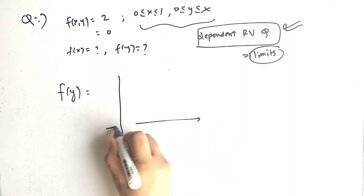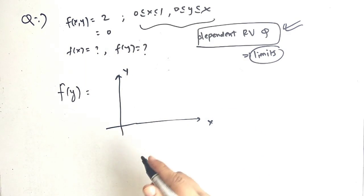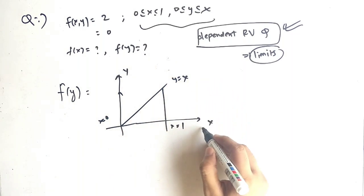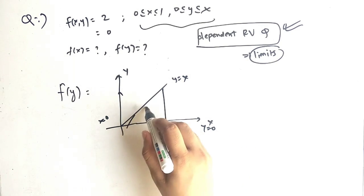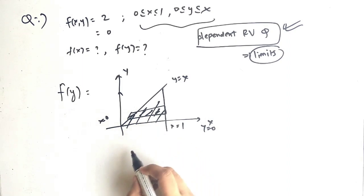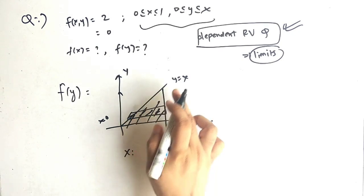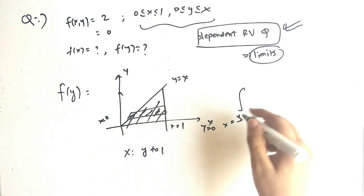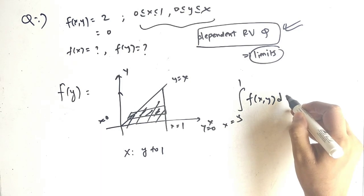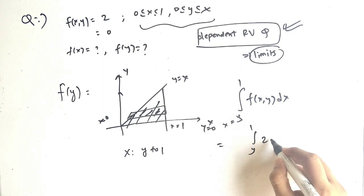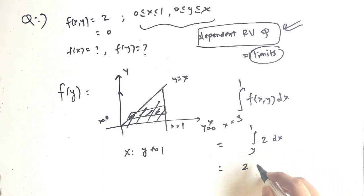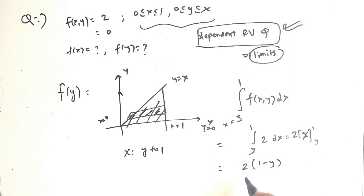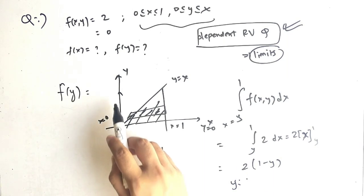Let's plot the graph again. X equals 0, x equals 1, y equals x, and y equals 0 — same region as before. Now we consider the horizontal strip to get the limit of x. The lower limit for x is y and the upper limit is 1. So the integral is from x equals y to 1 of 2 dx, which gives 2x from y to 1, equal to 2 times (1 minus y). So f of y equals 2(1 minus y), and since at x equals 1, y equals 1, y ranges from 0 to 1.